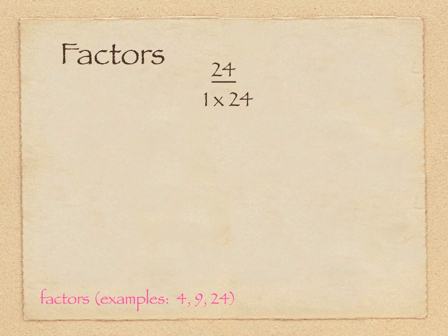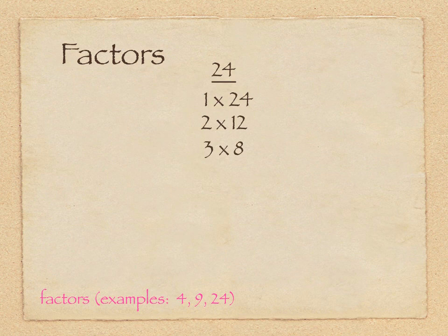You can always get a number by multiplying it by one. Another way to get to twenty-four would be two times twelve, three times eight, and four times six. So it's really important to know your math facts to do these factors.